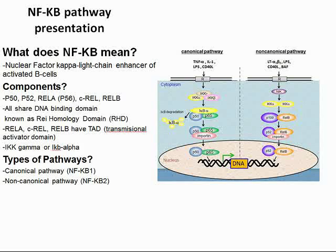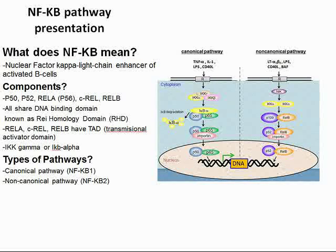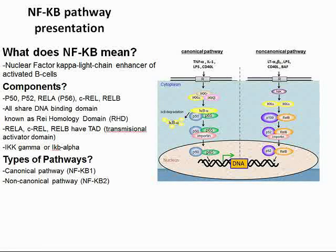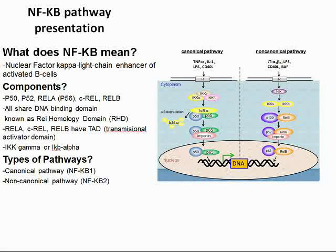Now, the IKB alpha is a primary inhibitor for NFKB. This inhibitor stops the dimer from binding and transcribing the nuclear DNA, and this prevents the immune response from going forward.